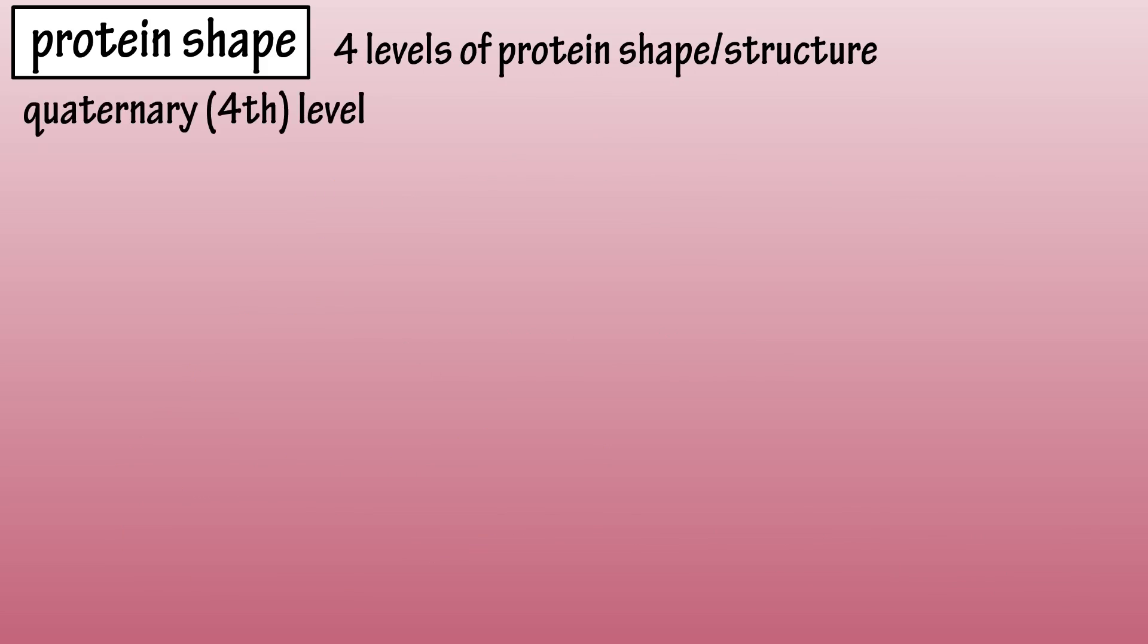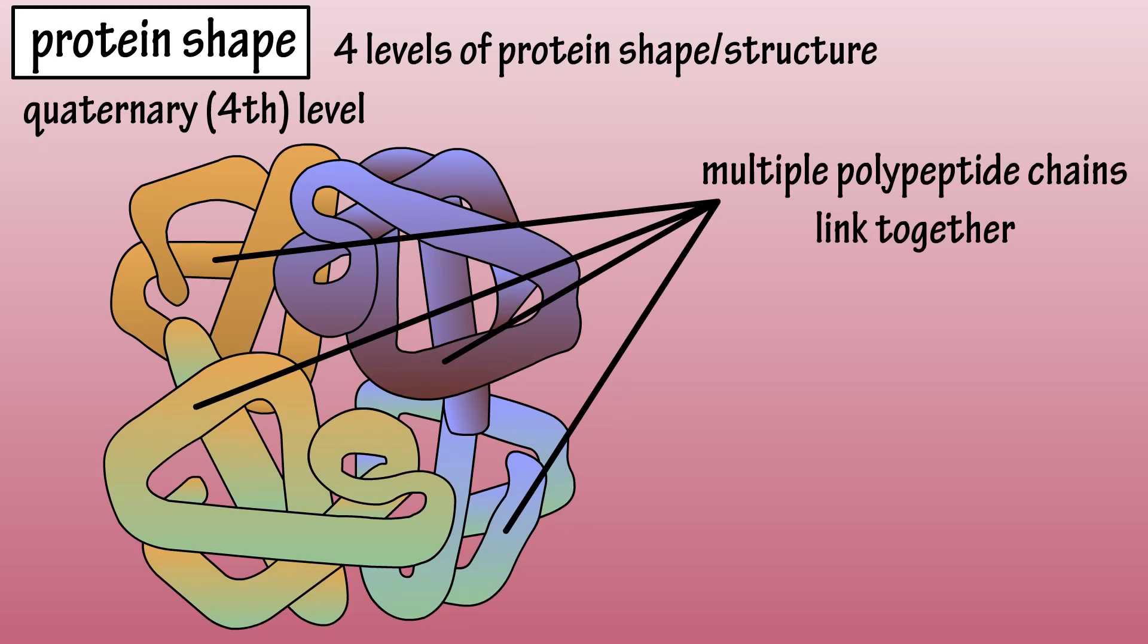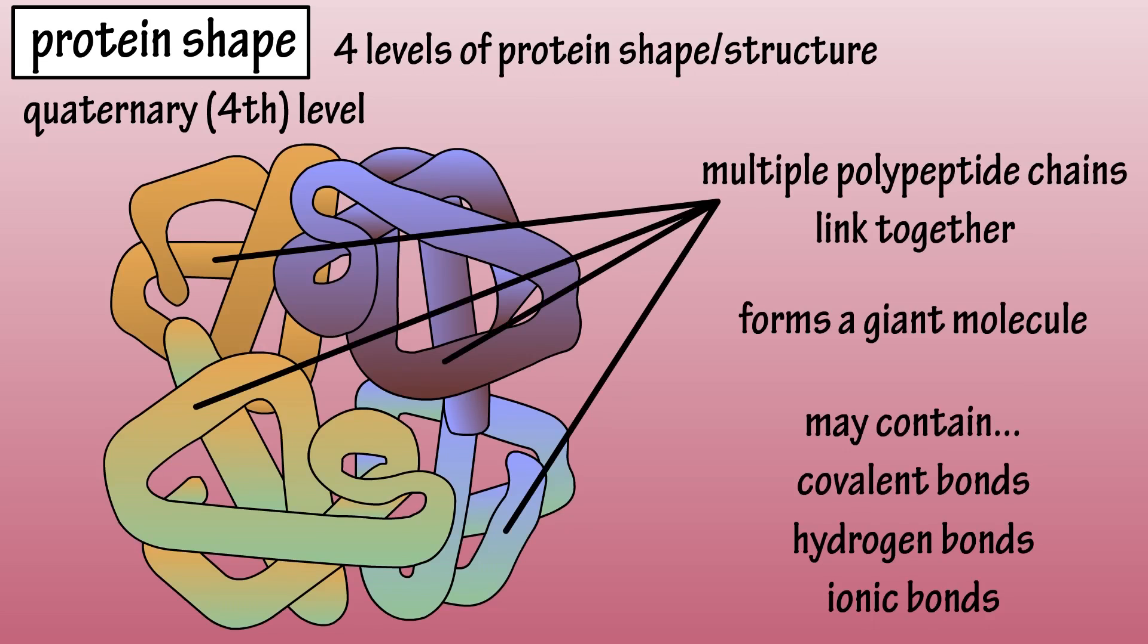The quaternary or fourth level is where clusters of more than one polypeptide chain link together to form a giant molecule. Many different types of bonds may be formed within this structure.